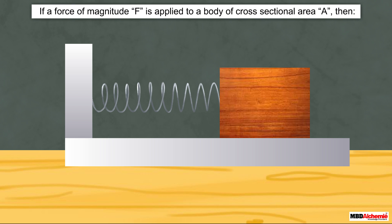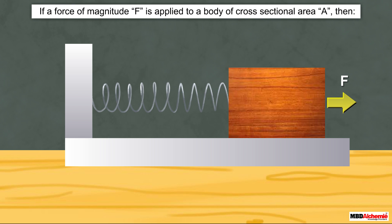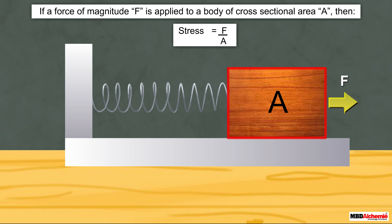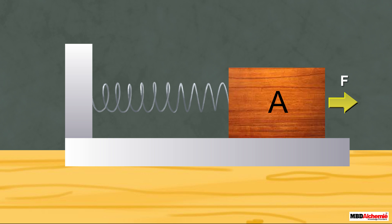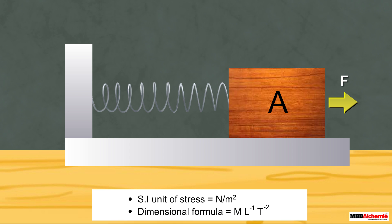The restoring force per unit area is known as stress. For example, if a force of magnitude F is applied to a body of cross-sectional area A, then the stress will be F divided by A. The SI unit of stress is Newton per meter squared, and its dimensional formula is M L⁻¹ T⁻².